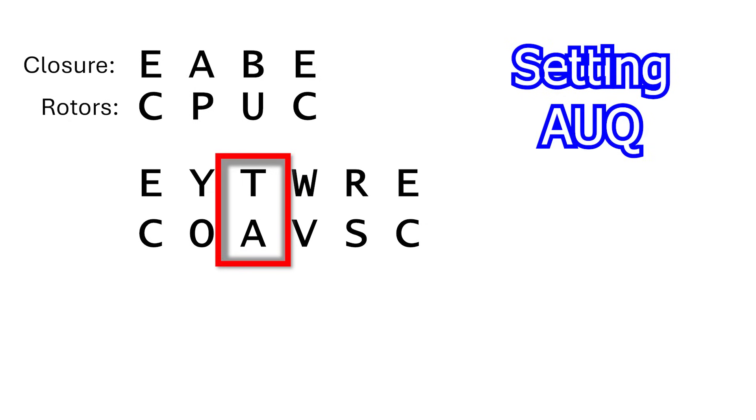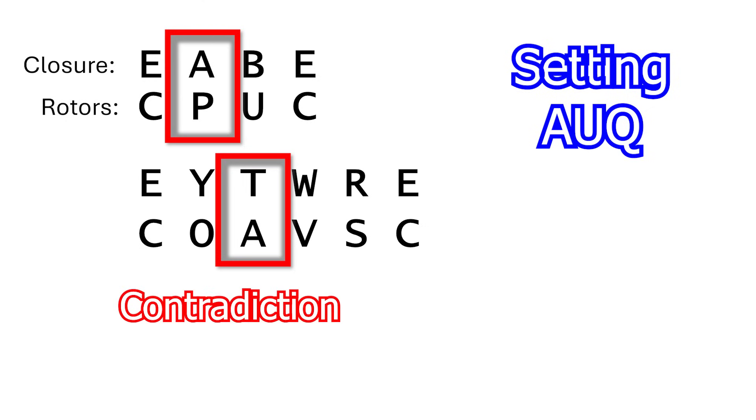A maps to T. We know from our previous closure loop that A maps to P. This is a contradiction given that the plugboard mappings remain the same for the whole message. How can A map to P and also map to T? Well, it can't. This is a false solution.